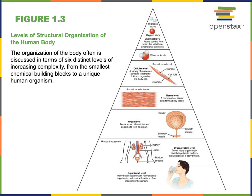Physiology involves the integration of information from multiple levels of biological organization. There are six distinct levels of increasing complexity, from the smallest and simplest — the chemical level — to the largest and most complex — the organismal level. At the chemical level we have atoms like hydrogen and oxygen, which can be held together through chemical bonds to form molecules like water. While molecules like water, proteins, nucleic acids, and lipids are essential for life, these molecules are not themselves alive; the smallest living units are cells.